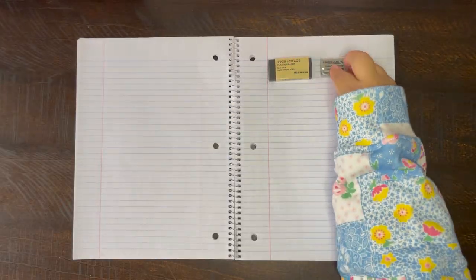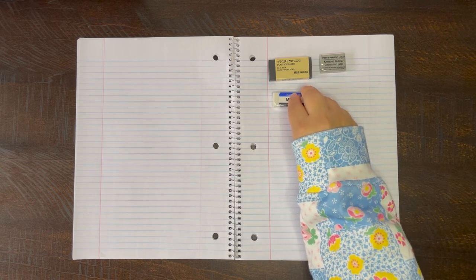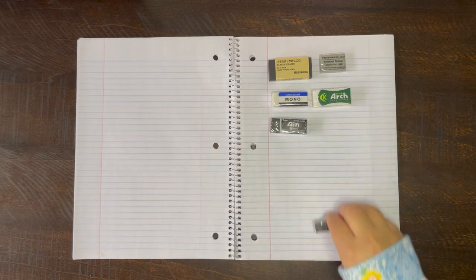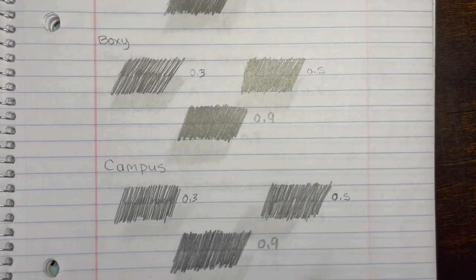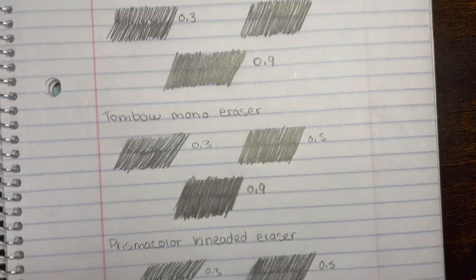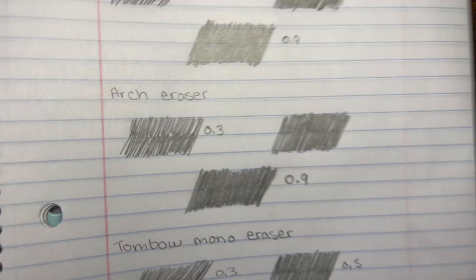Hello everyone, my name is Mark C and today we're going to do an eraser review. I will be testing out a Muji eraser and also a JetPens eraser sampler. It is temporarily out of stock now, but if you click the link in the description box then click on the description tab, it'll give you links for each individual eraser. I will be testing out these erasers using 0.3, 0.5, and 0.9 lead. But that's enough, let's just get started.